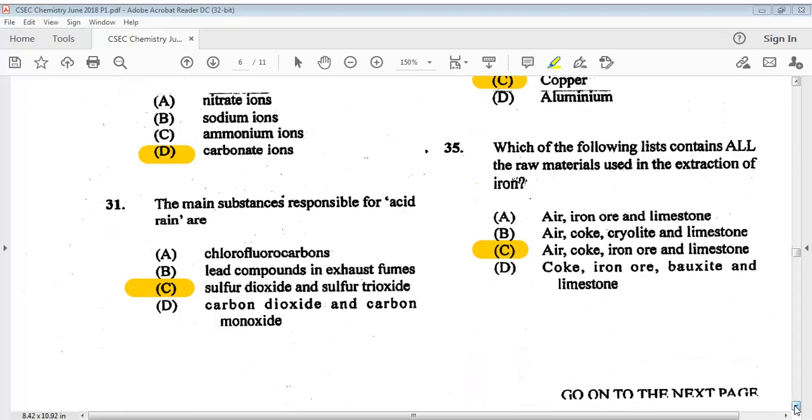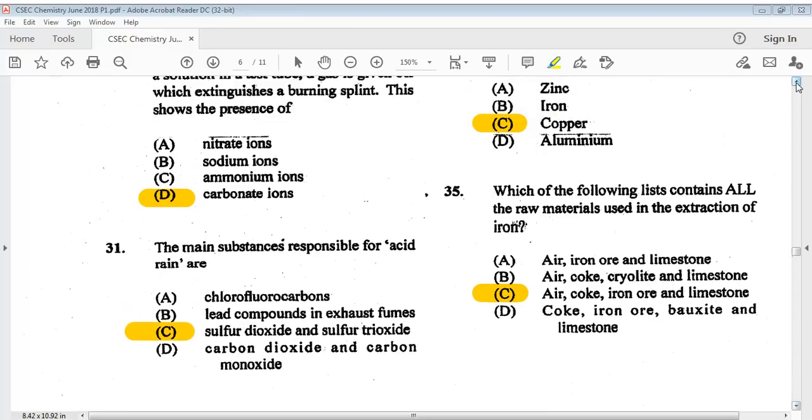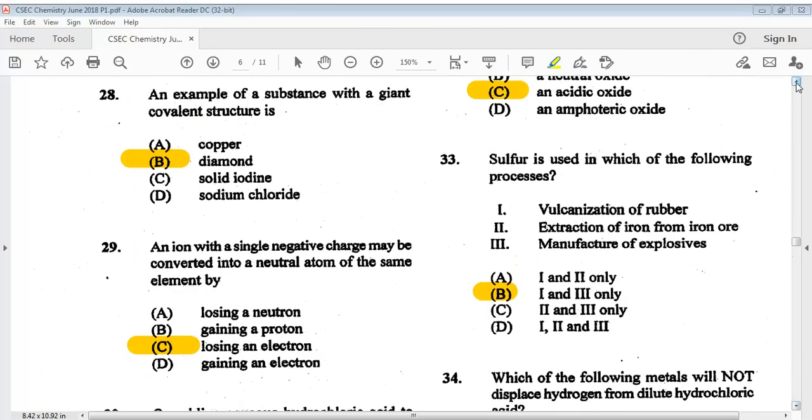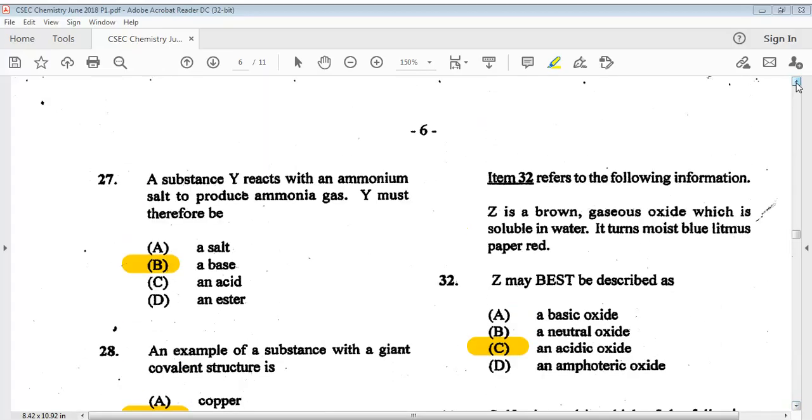Question thirty-one: the main substances responsible for acid rain are C, sulfur dioxide and sulfur trioxide. Question thirty-two refers to the following information. Z is a brown gaseous oxide which is soluble in water. It burns moist blue litmus paper red. Z may best be described as? The answer is C, an acidic oxide.